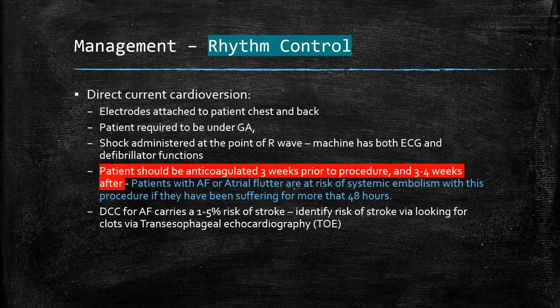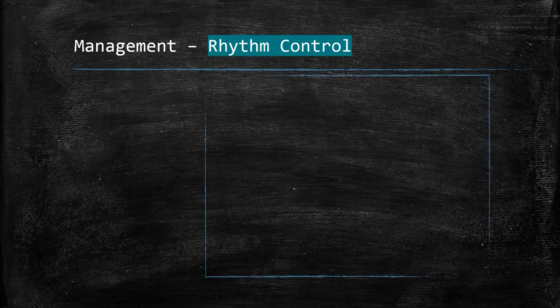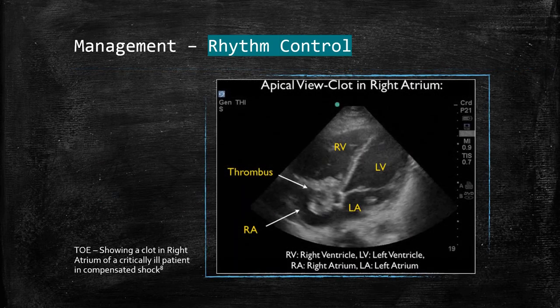With DC cardioversion, it's important for the patient to be anticoagulated three weeks prior to the procedure and three to four weeks after, due to the risk of systemic embolism. The procedure carries a risk for stroke, and this can be assessed via transesophageal echocardiography, where we can see if clots have formed. Here is an echo image showing a thrombus in the right atrium of a critically ill patient in compensated shock.